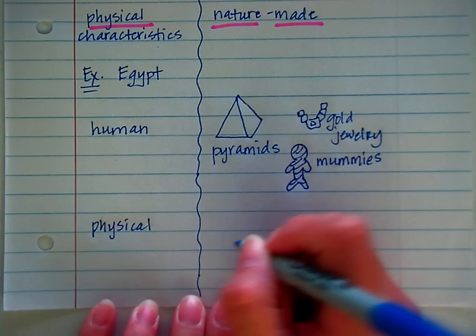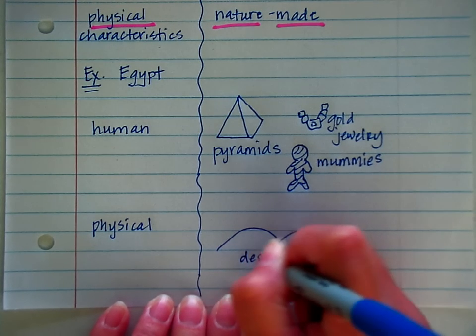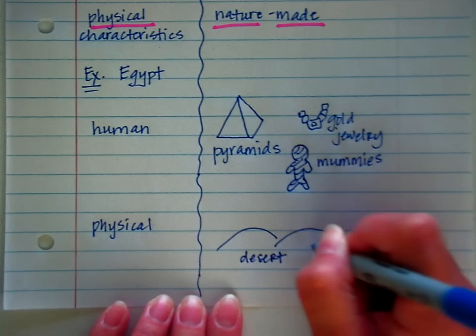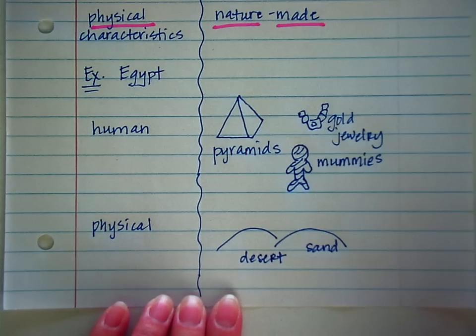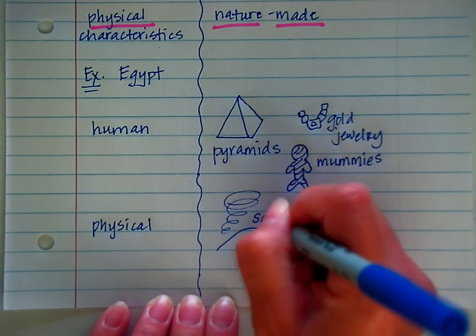Some of the things you might have drawn for physical characteristics for Egypt, maybe the fact that it's a desert region that it has a lot of sand. You could have drawn sand storms.